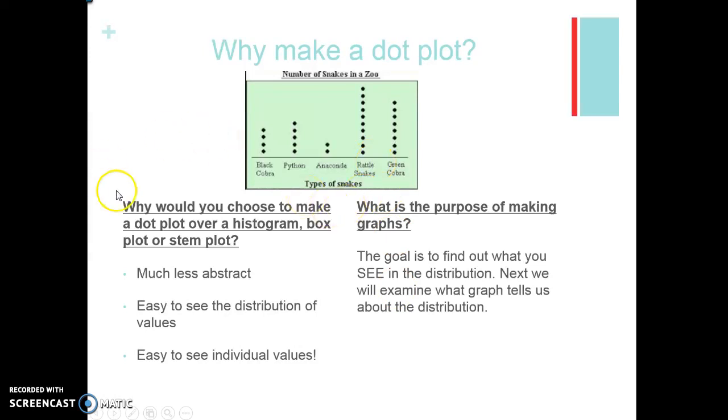So why would we make a dot plot? Why would we choose to make that over a histogram, a box and whisker plot, or a stem plot? Number one, it's much less abstract. That means it's very concrete. I can see all the data points and it's very easy to read. It's really easy to see the distribution of values.